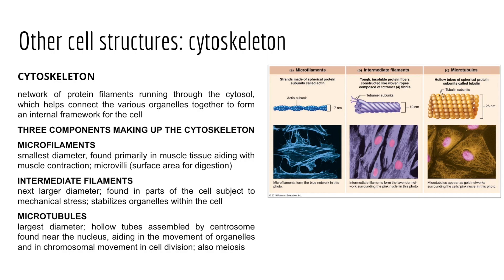Microfilaments are also a component found in microvilli — little finger-like projections of the plasma membrane found in epithelial cells that line the small intestine, greatly increasing surface area for nutrient absorption. Intermediate filaments are a little thicker than microfilaments and are found in parts of the cell subject to mechanical stress; they help stabilize organelles including the nucleus within the cell. Lastly, microtubules are the largest diameter cytoskeletal elements — long, unbranched hollow tubes assembled by a structure called the centrosome. Microtubules help determine cell shape, function in movement of organelles, and participate in chromosome movement during cell division.